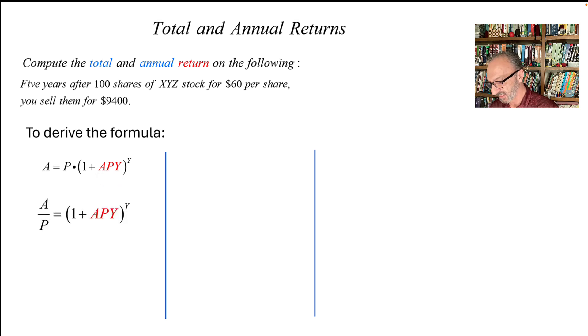To do that, I'm going to divide both sides by P to cancel P from here. And after that, to cancel the Y, I'm going to raise both sides to the reciprocal, which is 1 over Y.